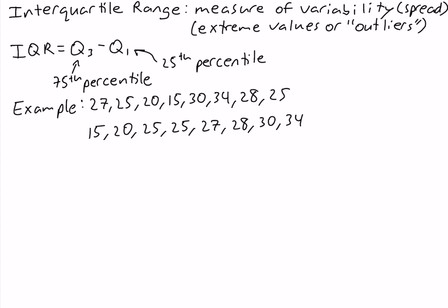Then we calculate the index using 75, and there are eight values. So 75 over 100 times 8 equals 6. Since our index is an integer, we average the values in positions 6 and 7. So let's number our values so we know their positions. From here, the third quartile is 28 plus 30 divided by 2, which equals 29.